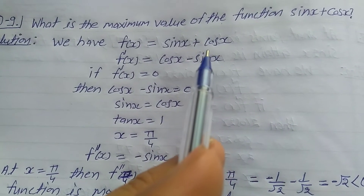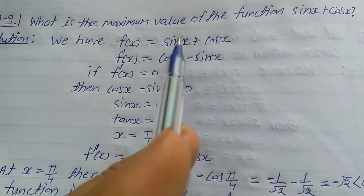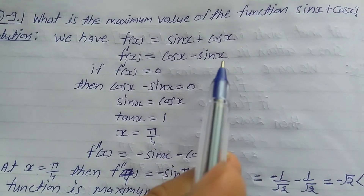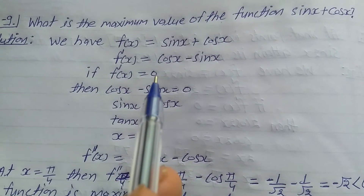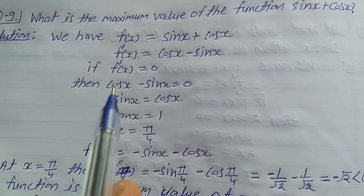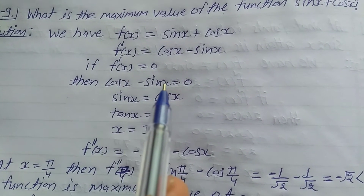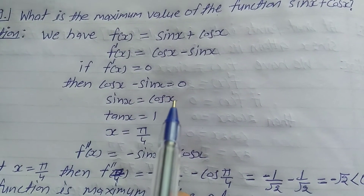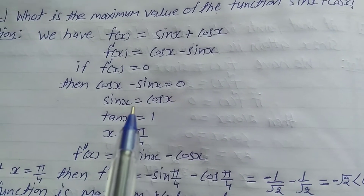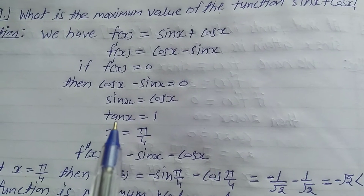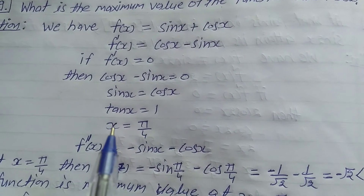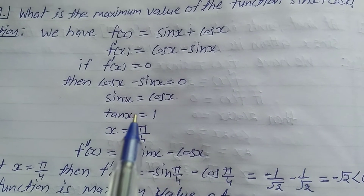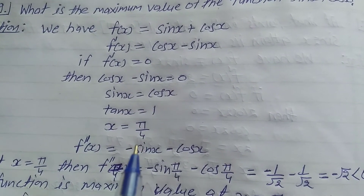Differentiate with respect to x: f'(x) is equal to cos x minus sin x. If f'(x) is equal to 0, then cos x minus sin x equals 0, so sin x equals cos x, which gives tan x equal to 1. Therefore x is equal to π/4.